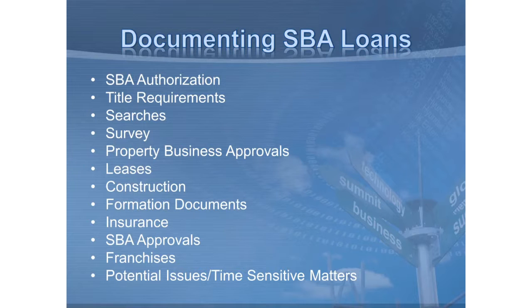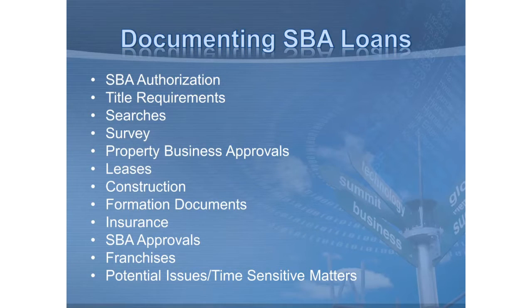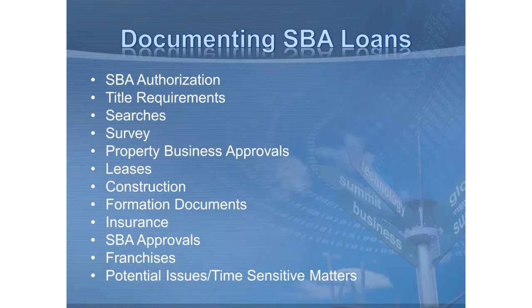The authorization gives, under 7A and 504, the authorization to participate in the program. With 7A, the authorization is signed by the particular lending official of the organization if you have a delegated loan, and it's signed by the SBA if it's a non-delegated loan. If it's a 504 loan, it's basically signed by the CDC and the borrower.